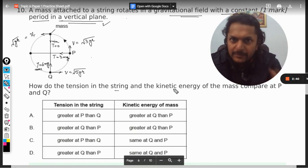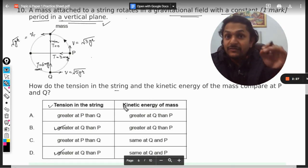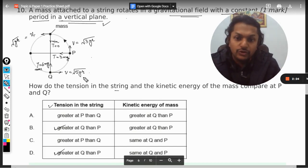If you have this information available, you can do all questions related to the topic of vertical circle. The tension in the string: is it greater at Q or at P? This is 6mg, this is 3mg, so it is greater at Q. What about the kinetic energy? You have to see the velocity. Here the velocity is more, √(5gr), so the kinetic energy is greater at Q than P.